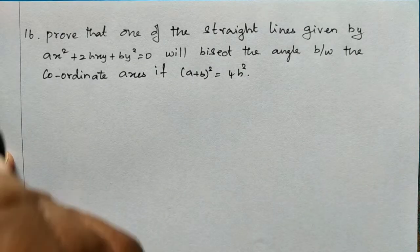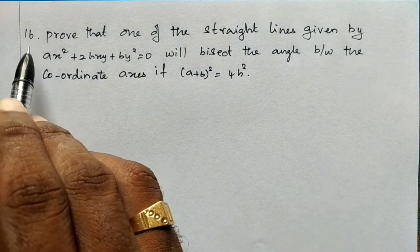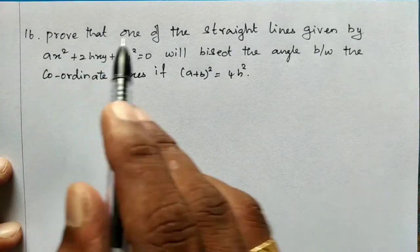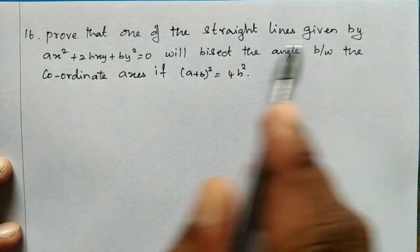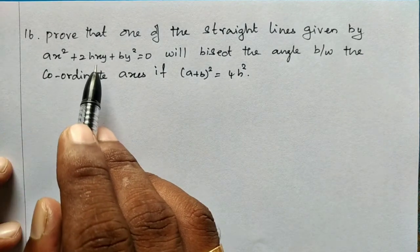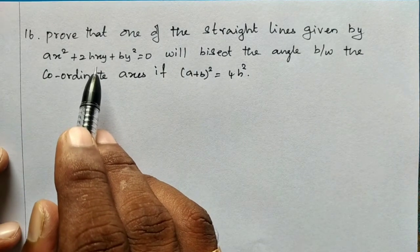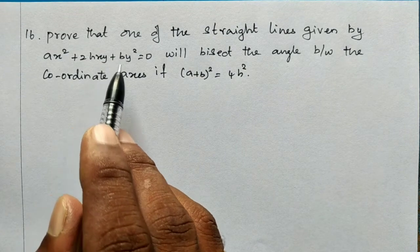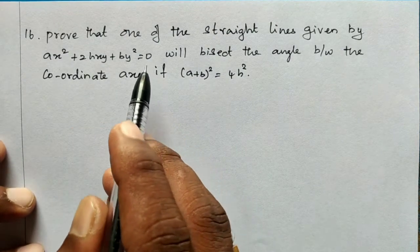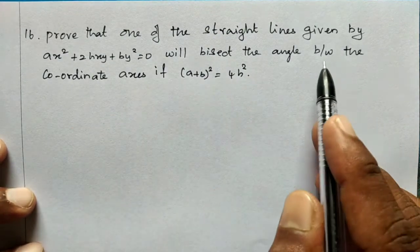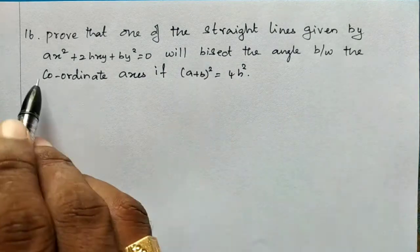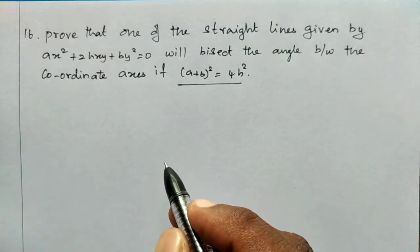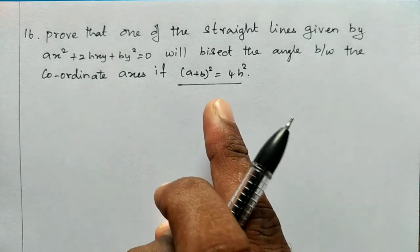Students, I am going to talk about the 11th maxilla exercise 6.4, question number 16. Prove that one of the straight lines given by AX² + 2HXY + BY² = 0 will bisect the angle between the coordinate axes if (A + B)² = 4H².